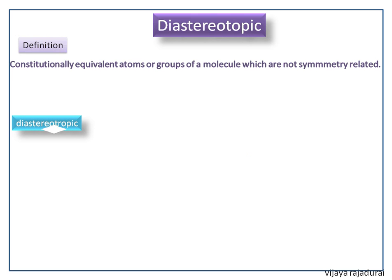Now we discuss diastereotopic. It is defined as constitutionally equivalent atoms or groups of a molecule which are not symmetry related. For this we consider two butanol.